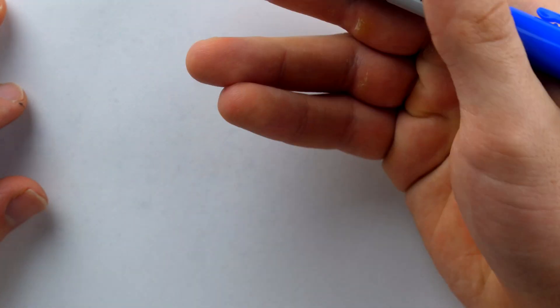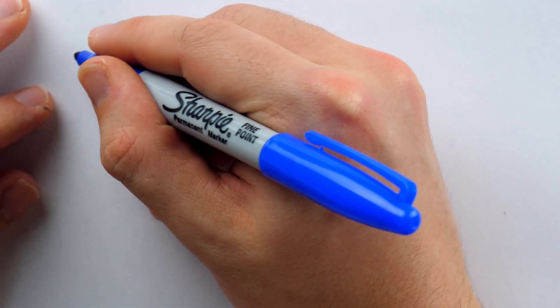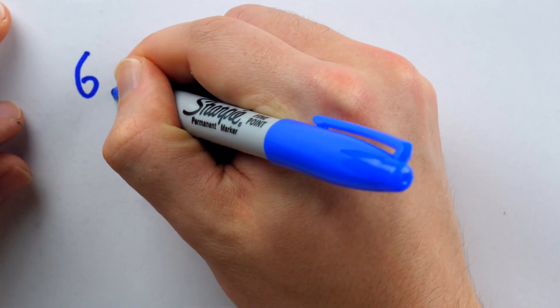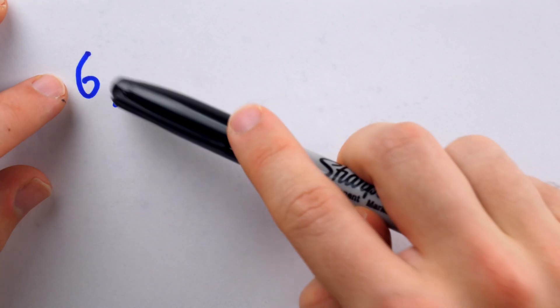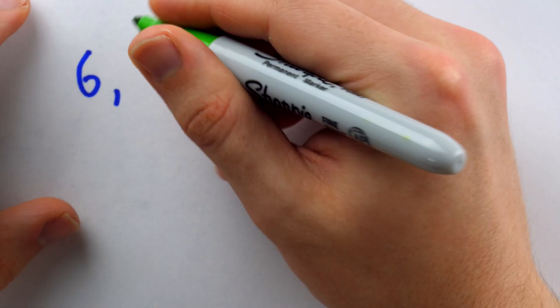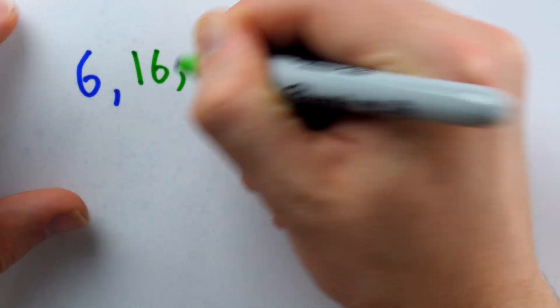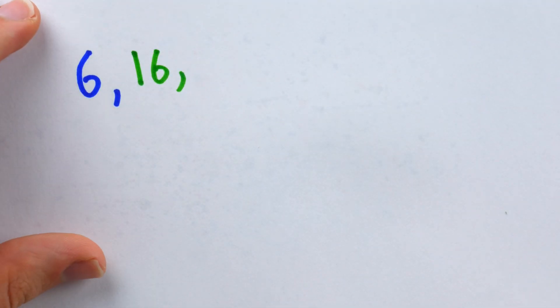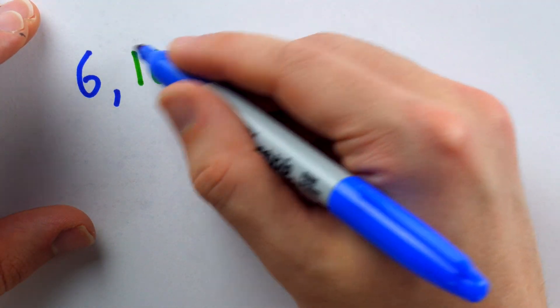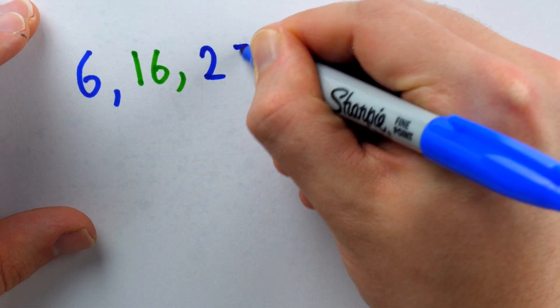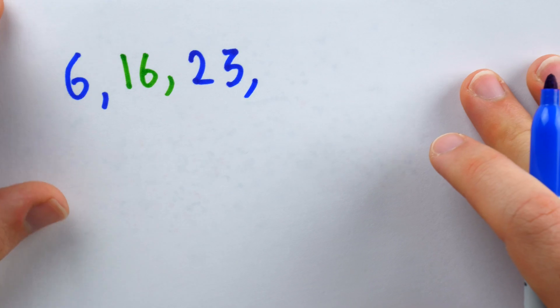In this simple game, players take turns alternately adding numbers from 1 to 10 to a running subtotal. So, for example, the first player may choose 6 and now that's the running subtotal. The next player then may add 10 to this subtotal. Thus, our new subtotal is 16. The next player may add, let's say, 7 to this. And so, our new running subtotal is 23. And so on.